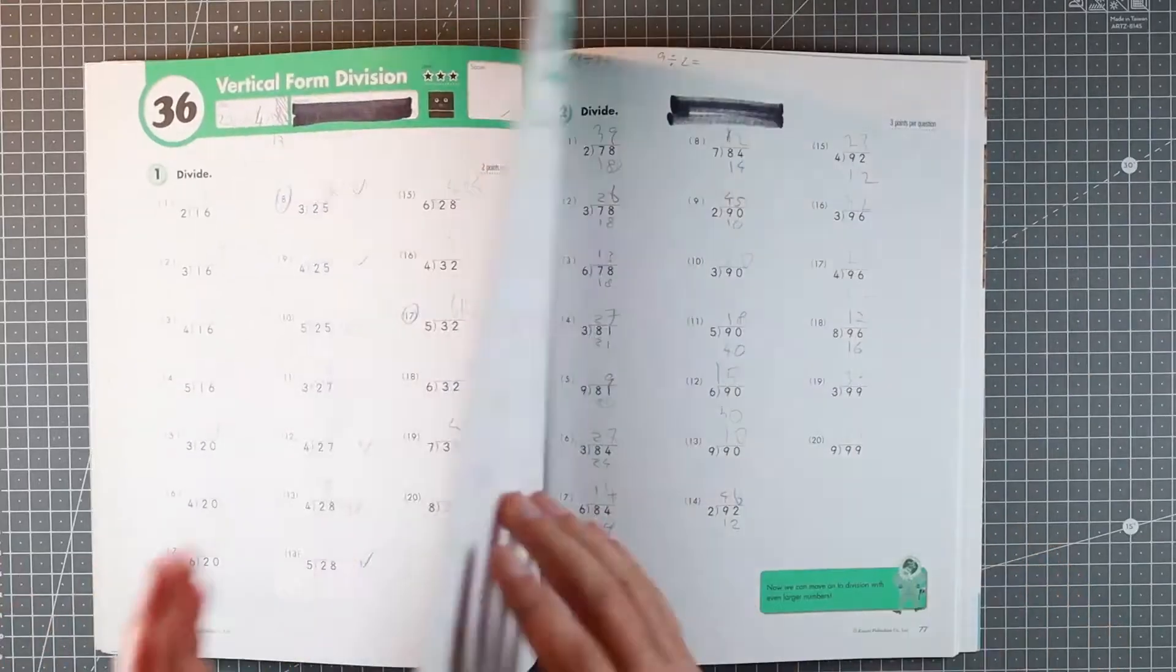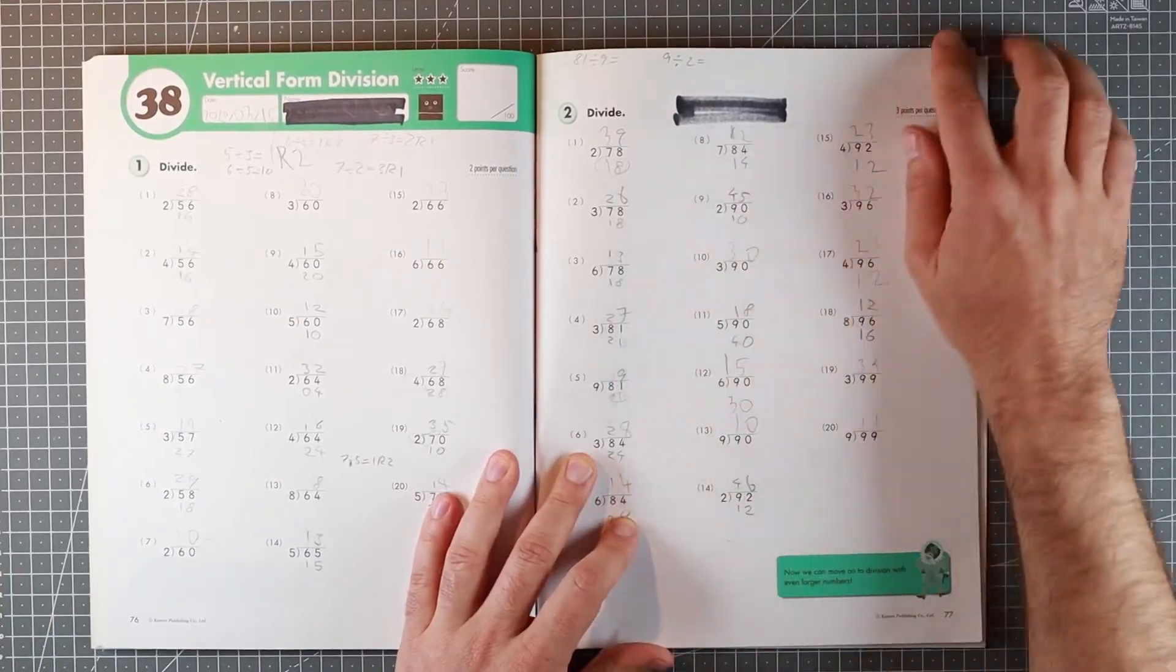Towards the end of the book, you then have the vertical division, which is kind of the American style-ish.